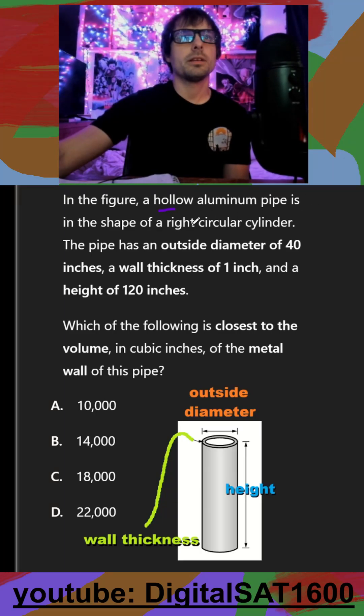We have a hollow aluminum pipe in the shape of a right cylinder. The pipe has an outside diameter of 40 inches, a wall thickness of 1 inch, and a height of 120 inches. They want to know the closest volume of the metal wall of this pipe.